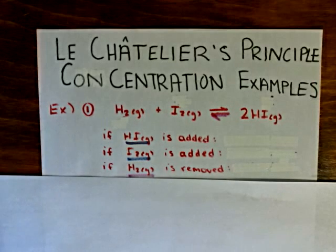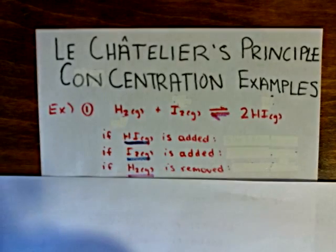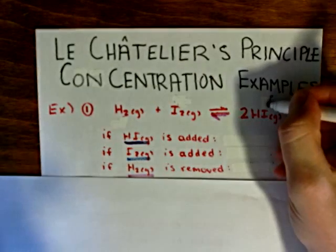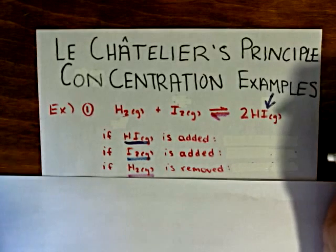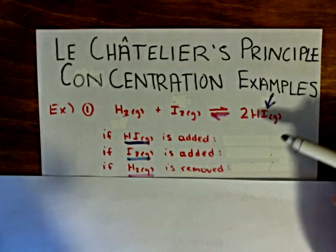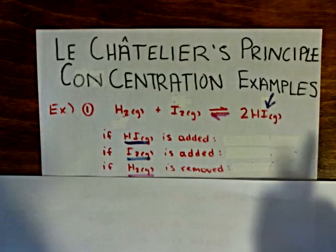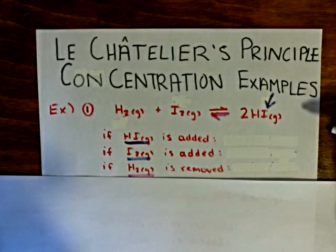If we have an addition of hydrogen iodide gas, how will that shift the position of the equilibrium? Well, if we add more hydrogen iodide gas, it means that we now have an excess of it.